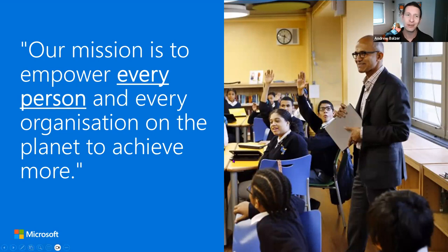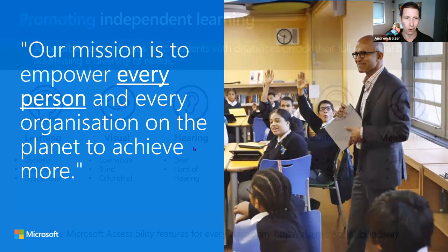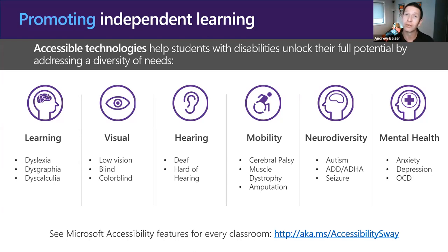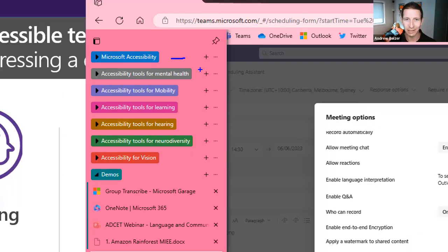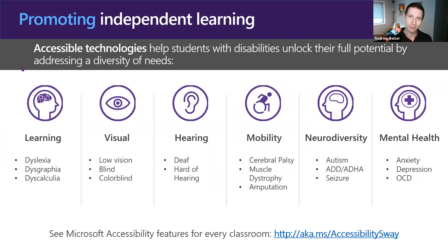At Microsoft, our mission is to empower every person and every organization on the planet to achieve more. Our CEO, Satya Nadella, is a huge leader in accessibility at Microsoft. When we design our applications — whether Windows or Office — we focus on covering learning, visual, hearing, mobility, neurodiversity, and mental health. I have browser tabs that cover nearly every one of these aspects, and we even have an accessibility Sway. Using Microsoft technologies, we do cover a lot of these aspects.